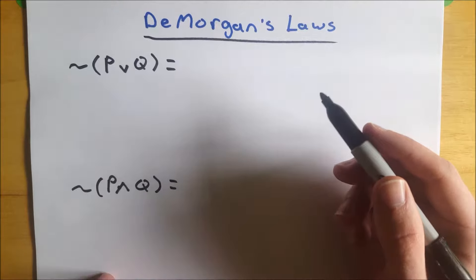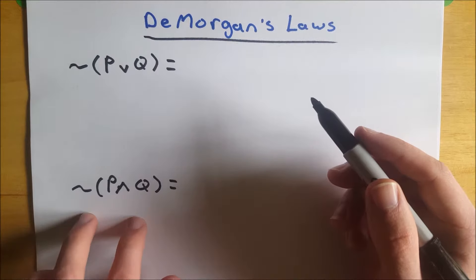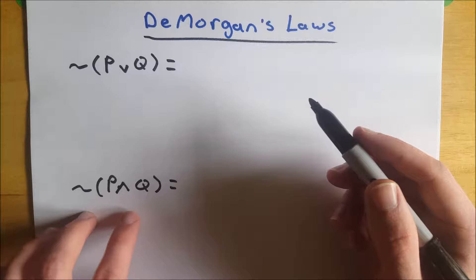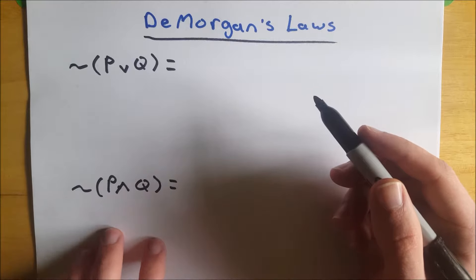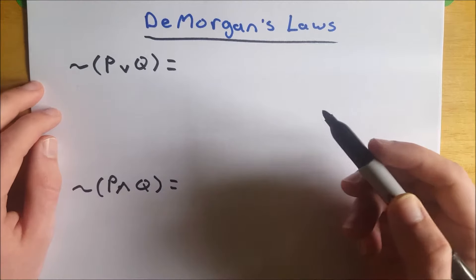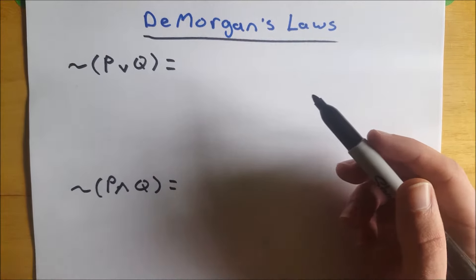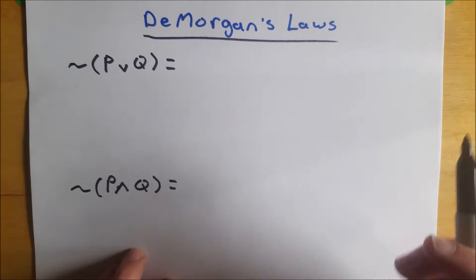So the two laws we're looking at are the logical equivalent of not P or Q, and then we're going to look at the logical equivalent of not P and Q. And for each one I will also give you what they look like in set notation. So you don't really even have to memorize these. I think you can figure them out pretty intuitively just by thinking about it.